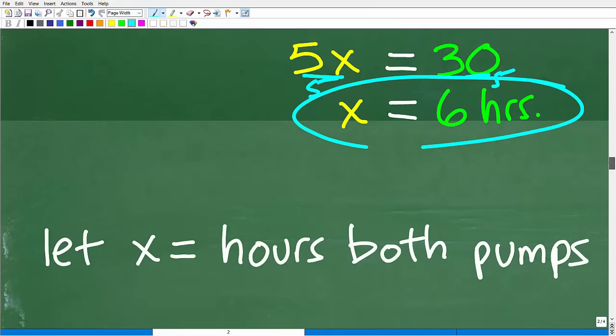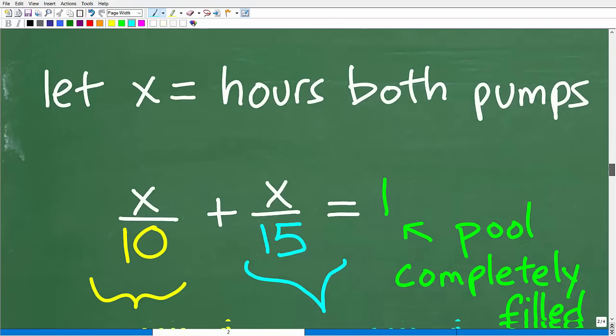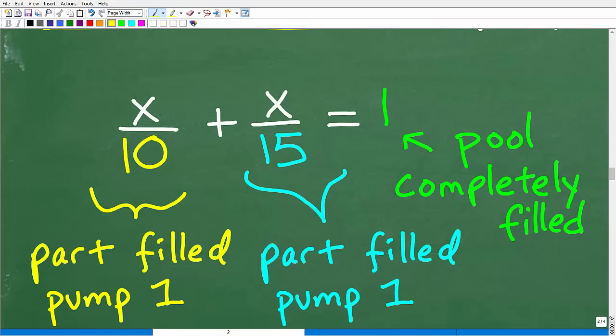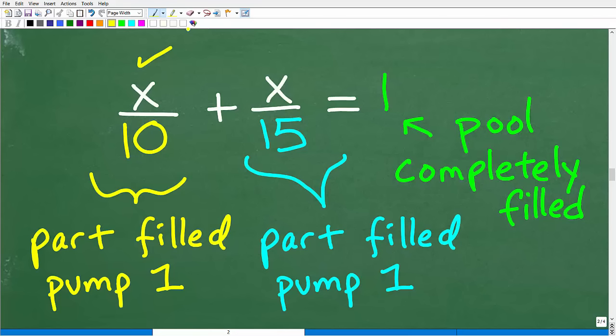These problems are a little bit confusing for sure. But let's take a look at another way that we can solve this problem. What we could do, we could say, let's just let X equal the hours of both pumps, it takes for both pumps working together.